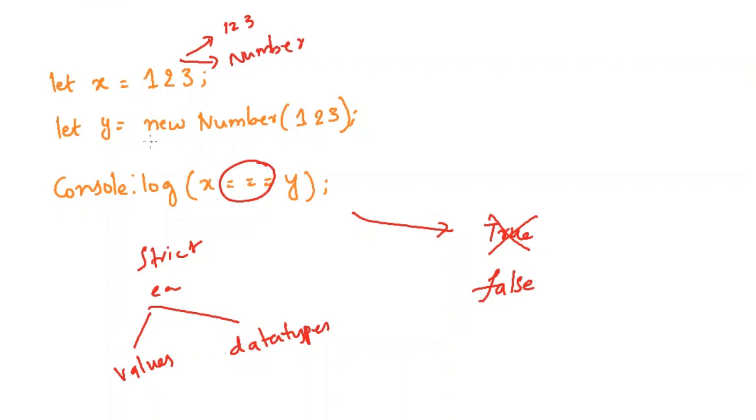Whereas here we are creating the number by using new Number constructor. The new Number will create a number object which holds the value of 123.